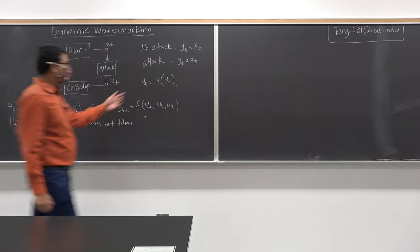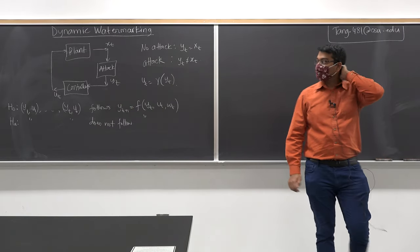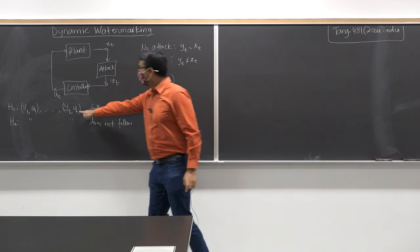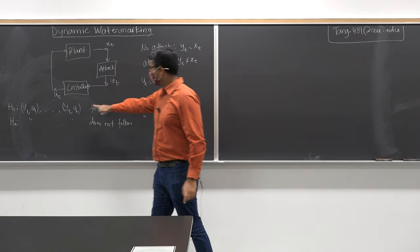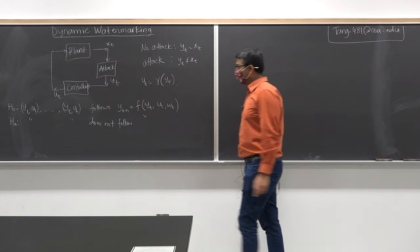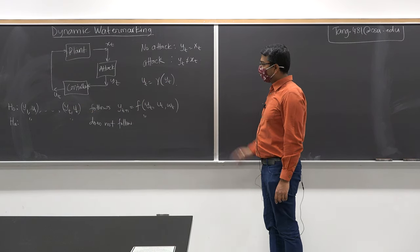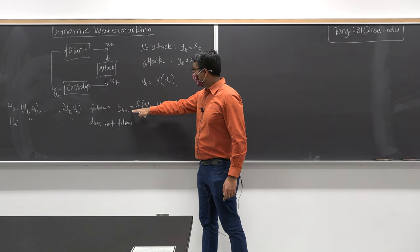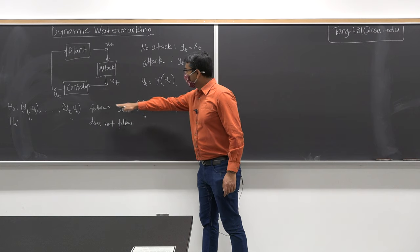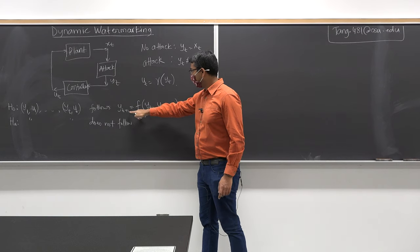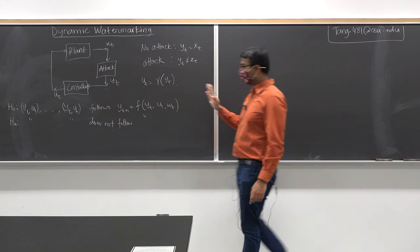You pick a policy gamma, and based on that policy, you are generating a sequence of observations at the controller. The controller knows y1, u1, y2, u2, all the way up to y_t, u_t, and all it has to check is whether that sequence of observations follows these dynamics or not. That's all it has to check.